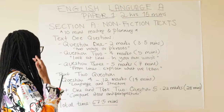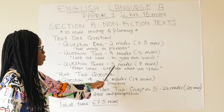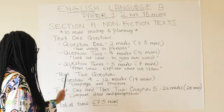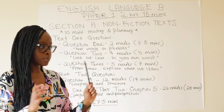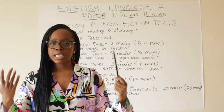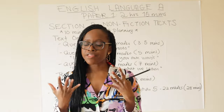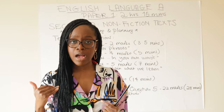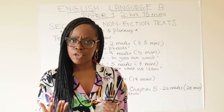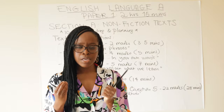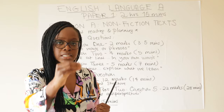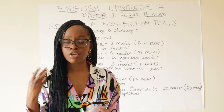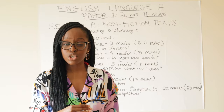Question three is the third question related to Text 1, the unseen text. It's worth five marks, and I'd suggest spending seven minutes on it. The wording is typically something like 'from lines [line numbers], explain what we learn about [keyword].' There's always a theme that comes up, and these keywords are always related to that theme, which also links to the Edexcel IGCSE anthology text you'll be asked to compare it to.